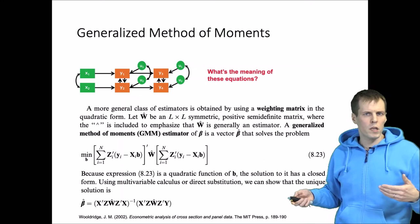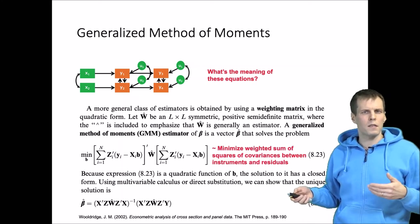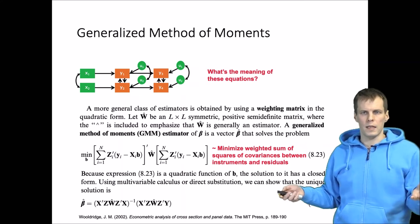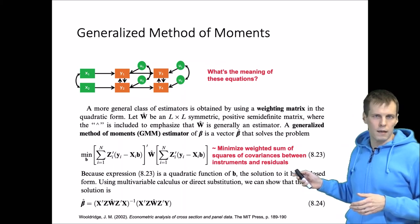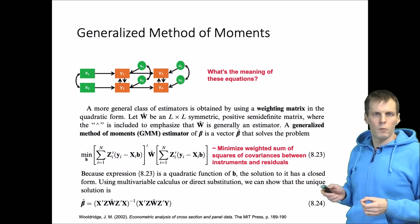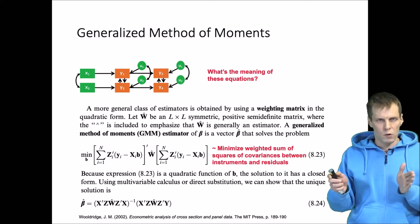The meaning of these equations is roughly that we minimize the weighted sum of squares of these covariances between instruments and residuals. How the weights are defined is not relevant at this point, but basically we try to get every instrument to be uncorrelated with every residual.